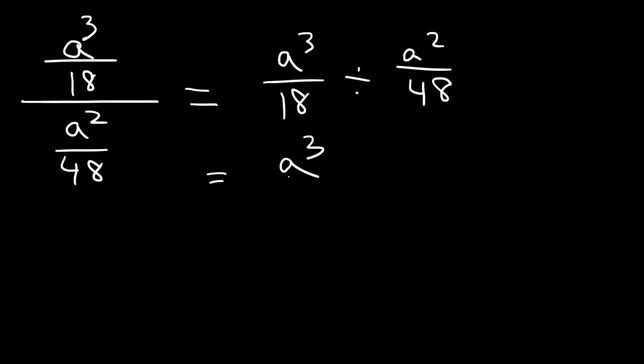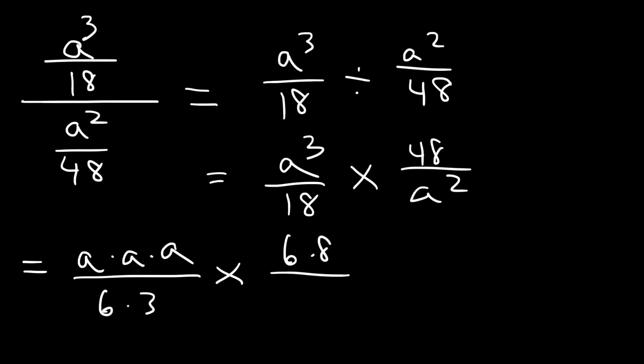So first, let's change division to multiplication. And let's flip the second fraction. Now at this point, let's factor so we can simplify by canceling stuff. a cubed, I'm going to write it as a times a times a. 18 is basically 6 times 3. 48 is 6 times 8. And a squared is just a times a.